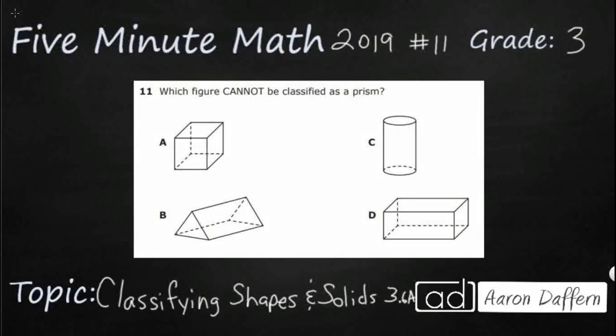Hello and welcome to 5-Minute Math. Today we are looking at the third grade concept of classifying shapes and solids. This is standard 3.6a in the great state of Texas and we are using number 11 of the 2019 released star test.